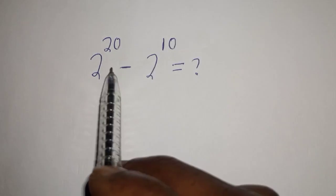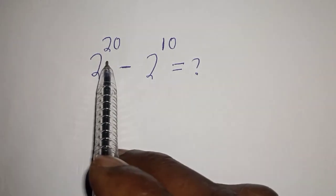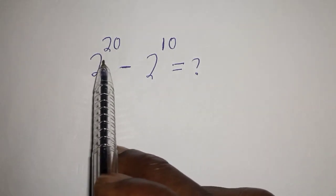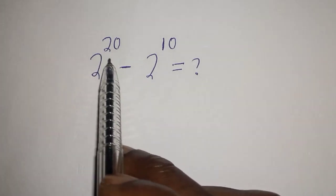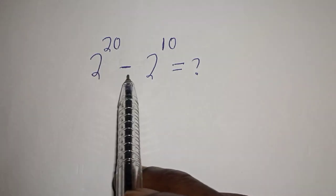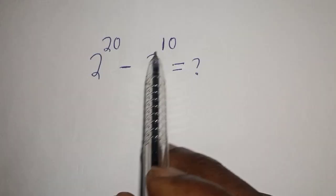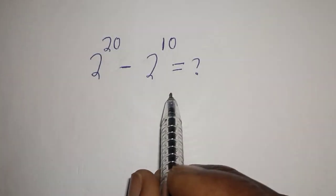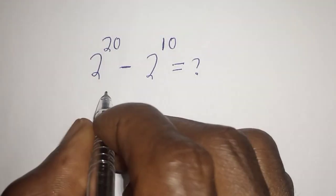Hello, welcome to MathFocus. How to simplify this nice math problem without using a calculator: 2 raised to the power 20 minus 2 raised to the power 10 is equal to what?